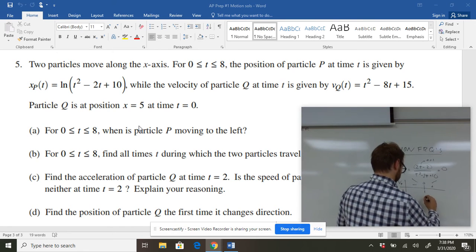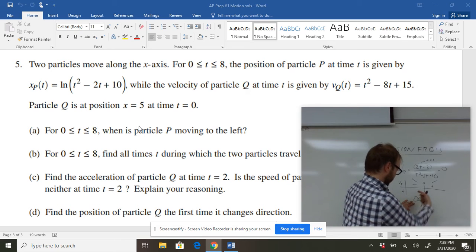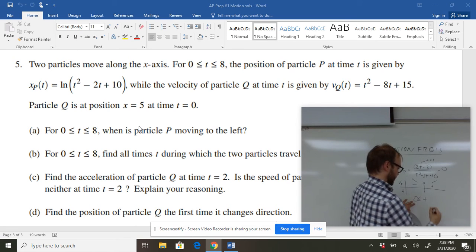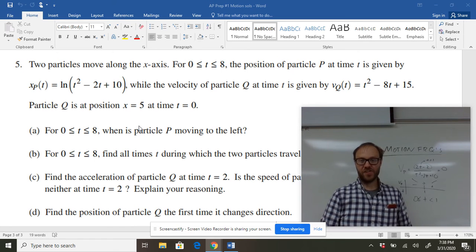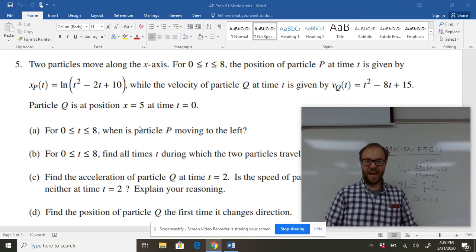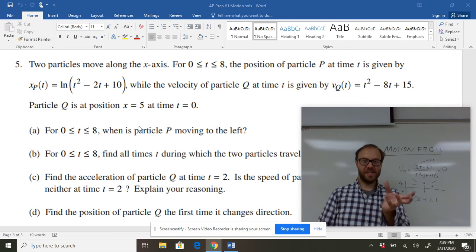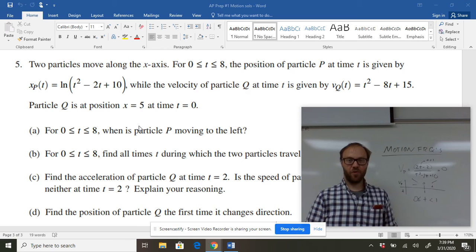So it is moving to the left for values of t equal to zero because it's got a negative velocity all the way to infinity up to one. And then velocity is zero at one. So that's pretty simple. Negative velocities and the break points between positives and negatives happen when the velocity is zero. So that's really the key for part A.